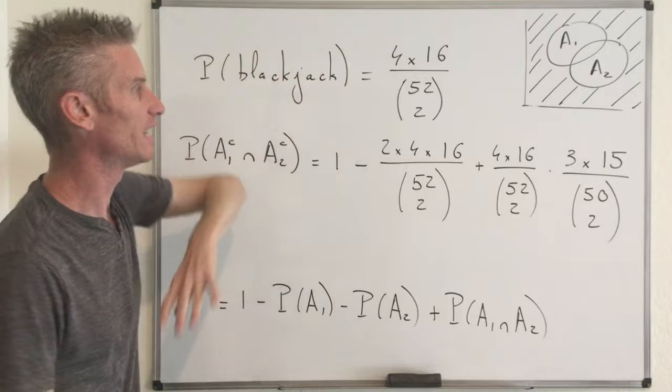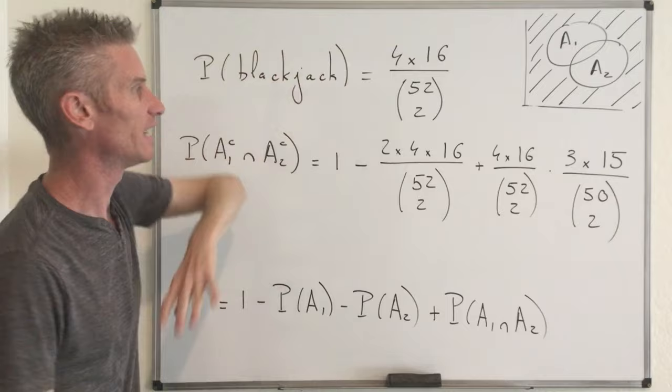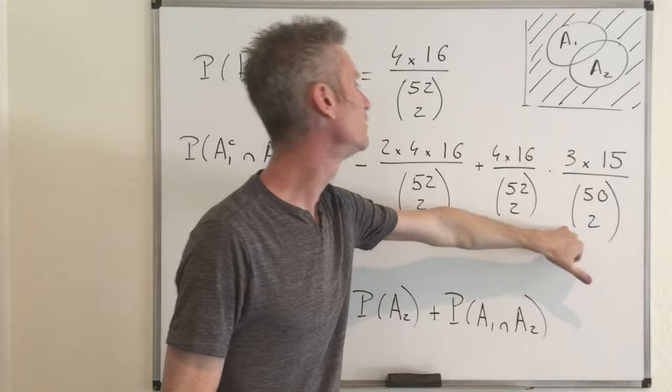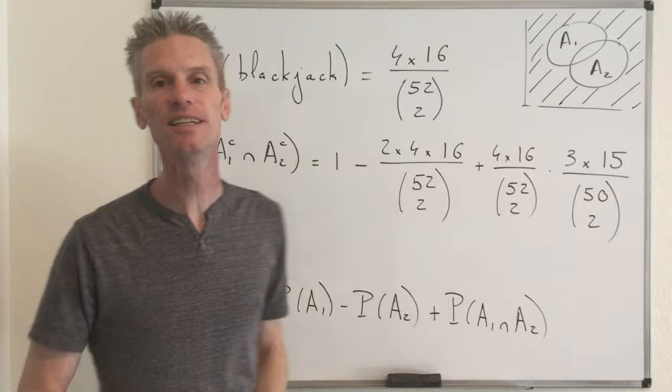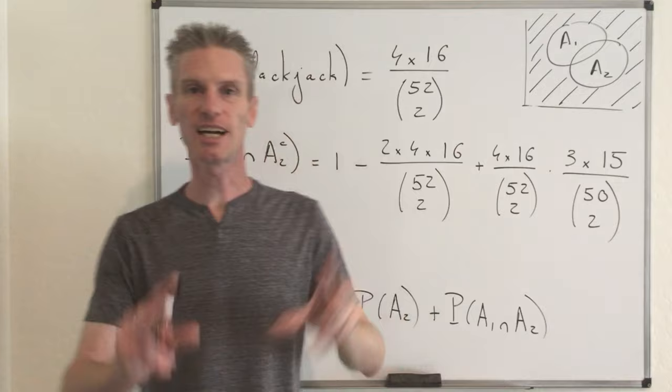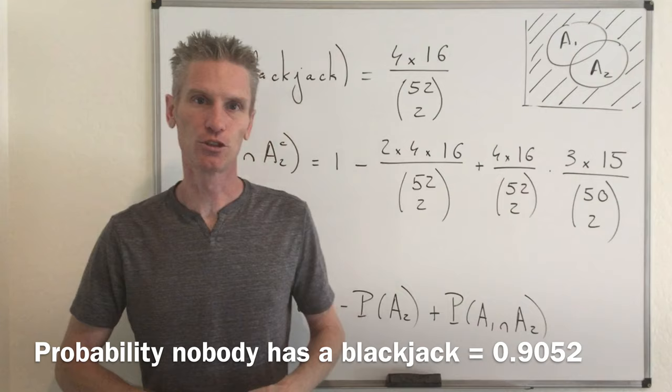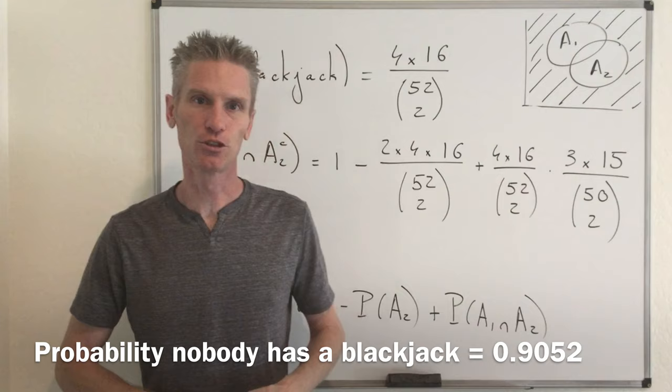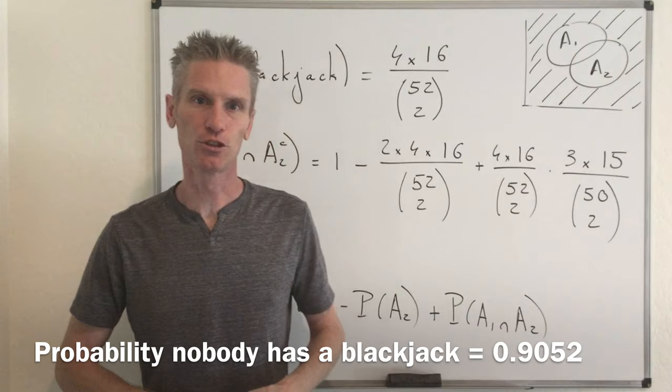Putting it all together: the probability that neither player has a blackjack is 1 minus 2 times (4×16 / C(52,2)) plus (4×16 / C(52,2)) times (3×15 / C(50,2)). Computing this explicitly, you find that the probability is approximately 0.9052 — so a little over 90% of the time, neither of the two players has a blackjack.